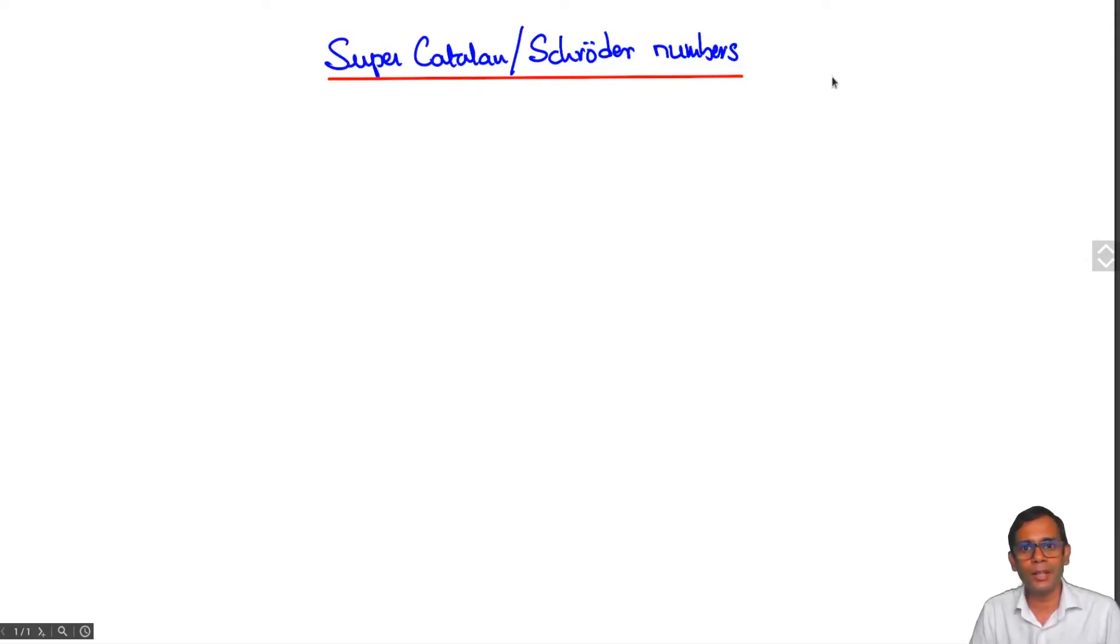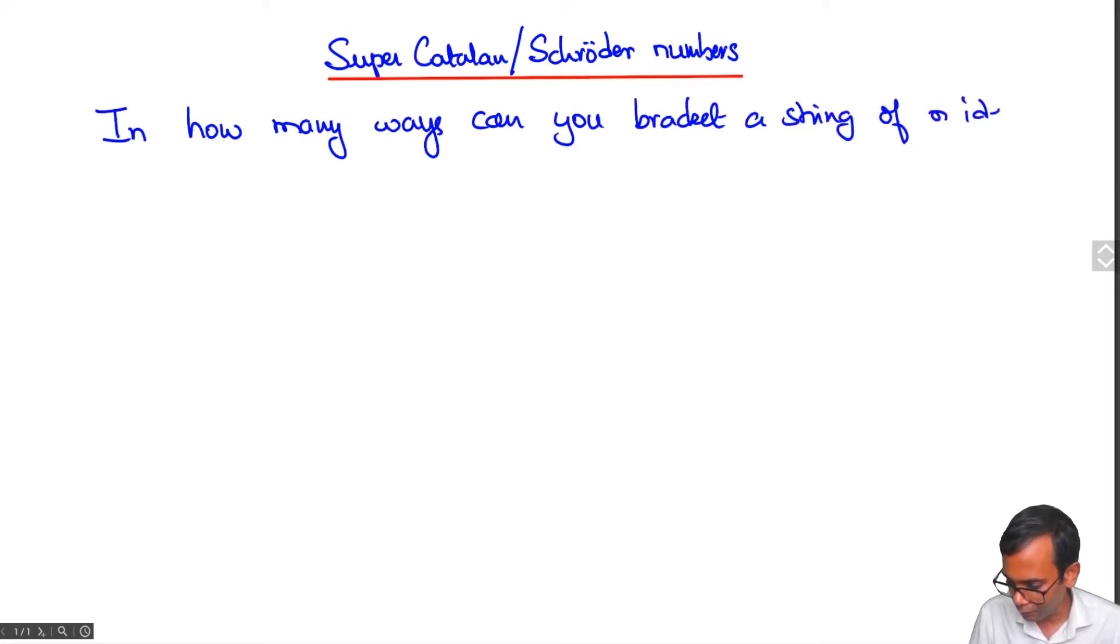In this lecture I am going to describe another recursively defined combinatorial class which is counted by the super Catalan numbers or what are also known as the Schroeder numbers. The basic question is in how many ways can you bracket a string of n identical symbols?